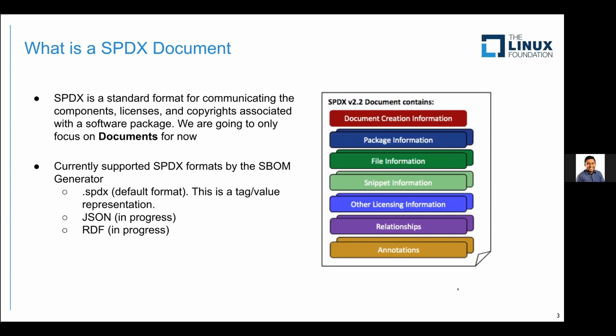It's a standard format where you communicate the components, licenses, and copyrights associated within a software package. Software is written in layers — you have N number of packages, dependencies, and transitive dependencies. You compile from source code, but there could be runtime dependencies too. We look at this in a seven-layer format: fields for documentation creation and versioning, package definitions, individual file-level information, and more.